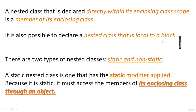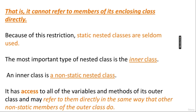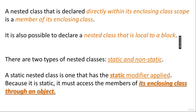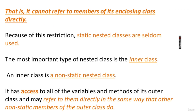There are two types of nested classes: static and non-static. A static nested class is the one that has the static modifier applied. Because it is static, it must access the members of its enclosing class through an object — it cannot refer to members of its enclosing class directly without using an object. Because of this restriction, static nested classes are seldom used.